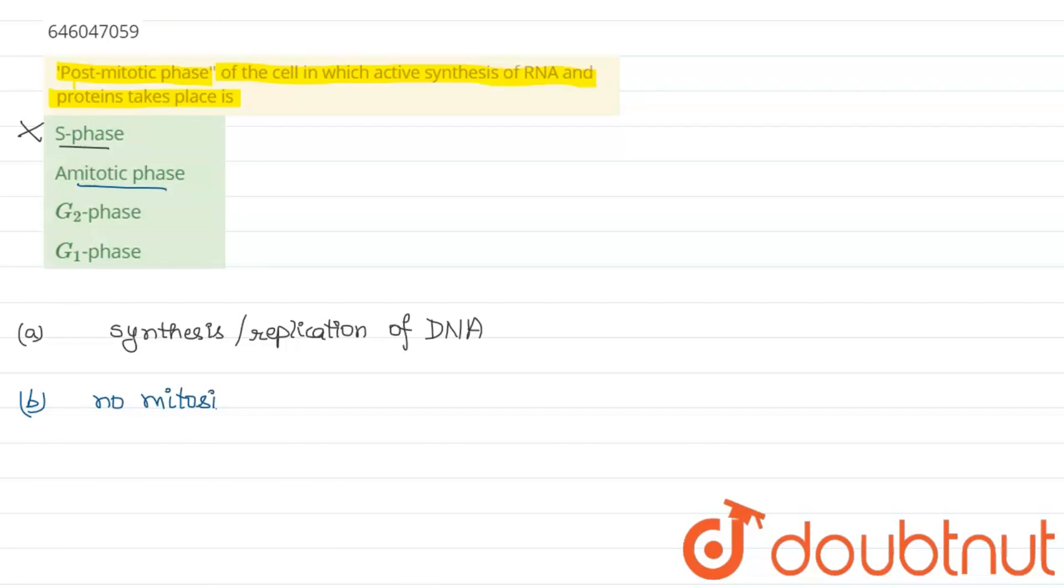Coming to the third option, we have the G2 phase. So the G2 phase is the third sub-phase of the interphase of the cell cycle, and during this phase there is a period of rapid cell growth and protein synthesis. So there is rapid cell growth and protein synthesis. In this phase there is synthesis of protein but no synthesis of RNA, so this option is also wrong.